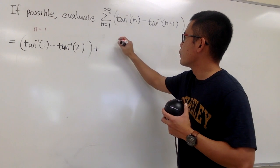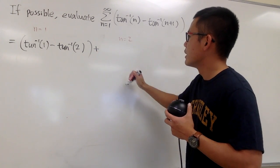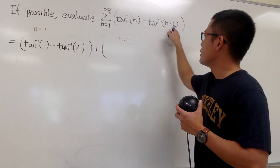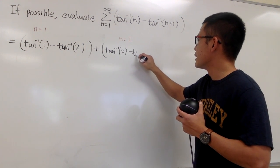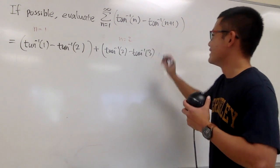And then we will be adding this with when n is equal to 2. Plug in 2 into here and here, we will have the inverse tangent of 2 minus the inverse tangent of 3.